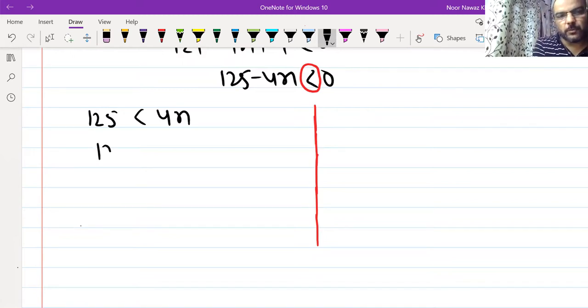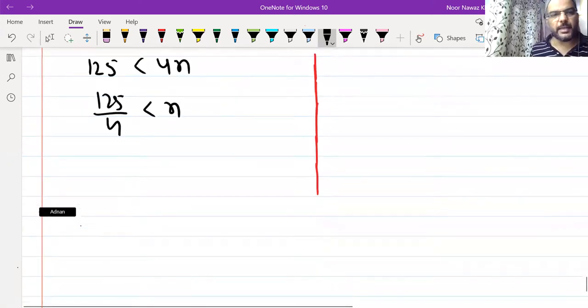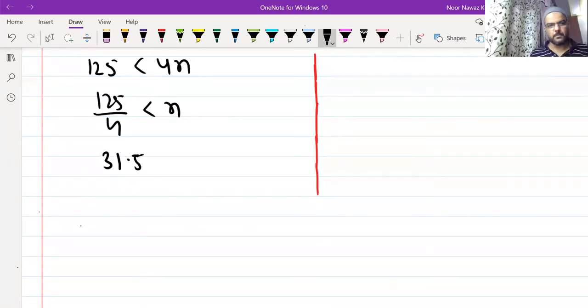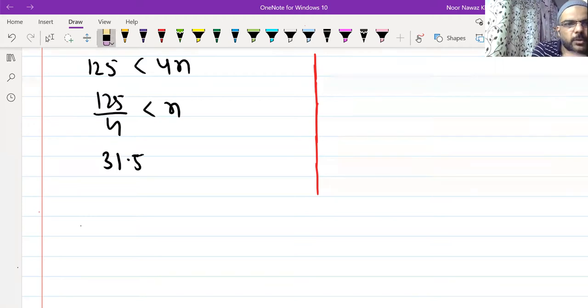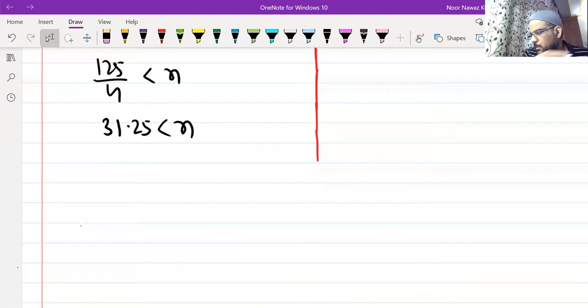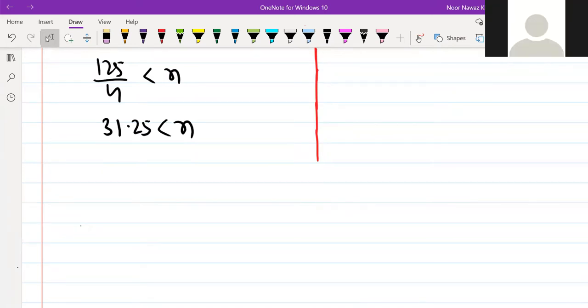Everybody here, here is divide. 125 by 4 what? 4, 4, 4. Nearly 31.25. So n must be more than 31.25. n is more than 31.25.